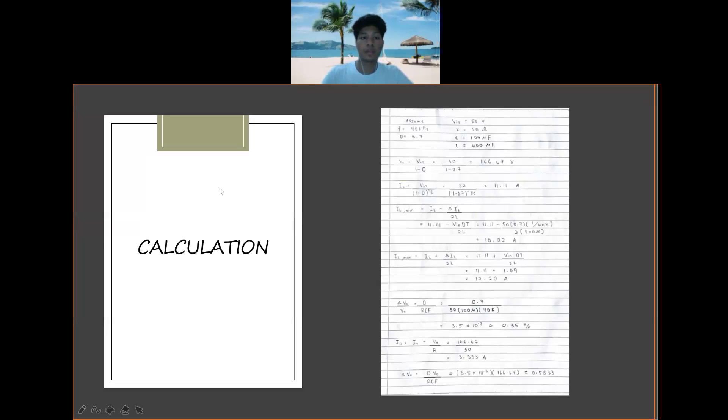Now we look at calculation. For calculation we assume that we use our frequency is 40kHz and duty circuit is 0.7. For V, resistor, capacitor and inductor, these values will be given to us in this mini project in the report. Now we look at first, we find the V out. V out, we use this formula which is V in divided by 1 minus D. And we get our value for V out is 166.67.